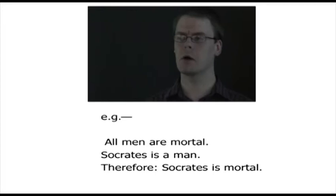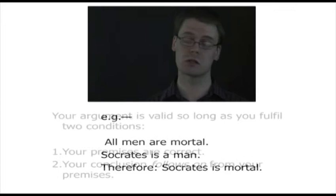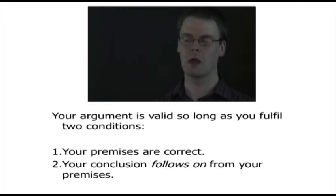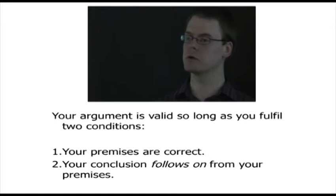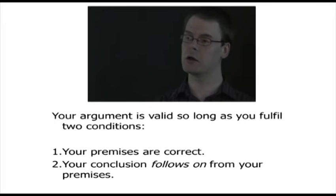So how do you know that you've actually got a strong argument and that your argument works? Your argument is valid so long as it follows two conditions. Firstly, your premises must be correct — they must be true. So if the first premise was 'all men are immortal', clearly the conclusion wouldn't work because that isn't true. The second condition is that your conclusion must follow on from your premises. So if the argument is 'all men are mortal, Owen is a man, therefore Socrates is mortal' — well, that may be true but the premises don't actually lead to that conclusion.